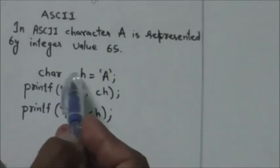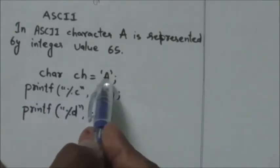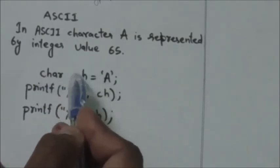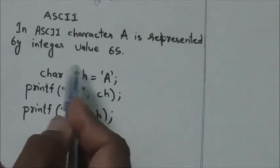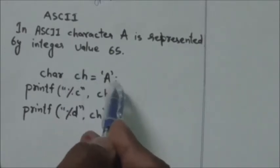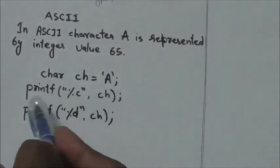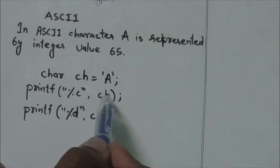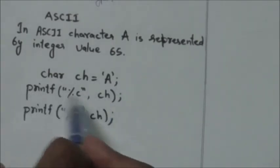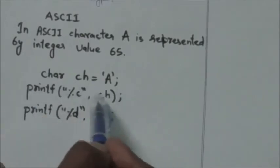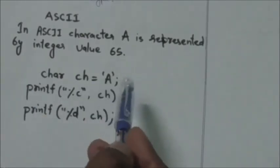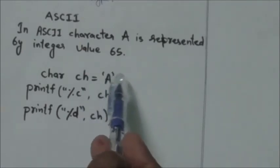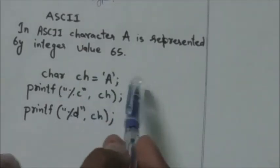Here you can see this statement: char ch = 'A'. In this statement I have declared a character type variable ch and initialized it with the character literal capital A. Now in the next statement you can see the printf function, where I have used %c as a placeholder. The output of this statement when executed will print the character capital A, because variable ch is a character type variable representing capital A.